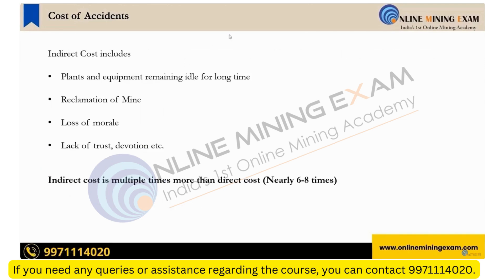Indirect costs include: plants and equipment remaining idle for a long time. If there is an accident and you cannot use the machinery, it is not going to be productive. You also have to clear the muck and remove the dumps before starting work again, which requires spending money. So directly it is not attached to the accident, but indirectly it is attached — because if that accident had not occurred, that cost would not have been there.